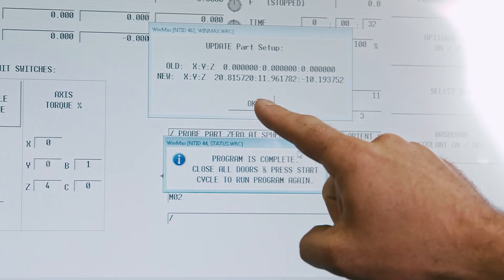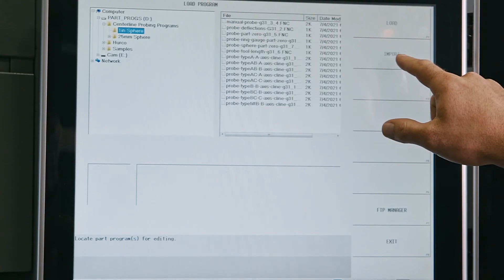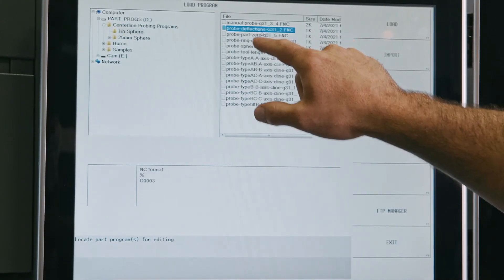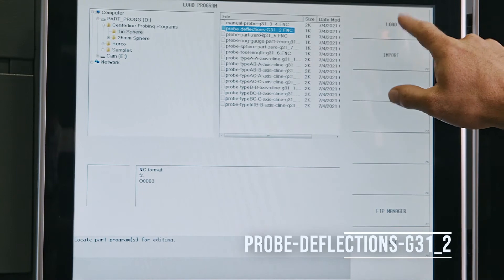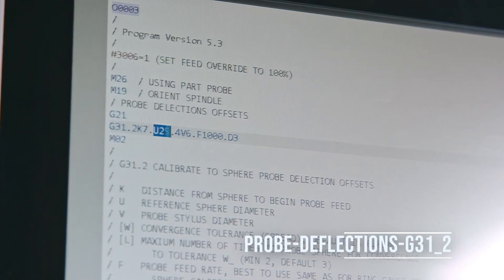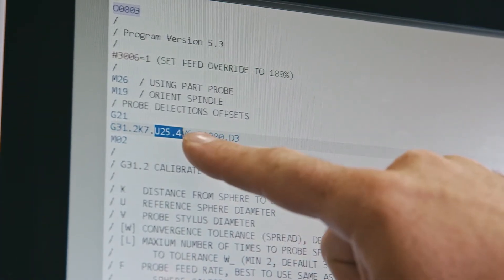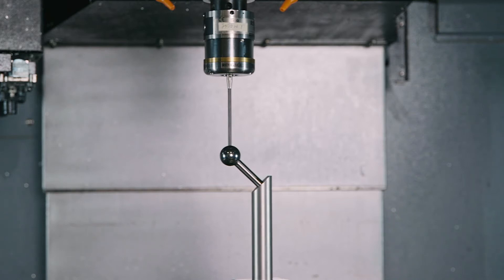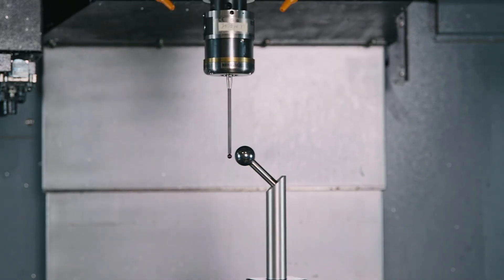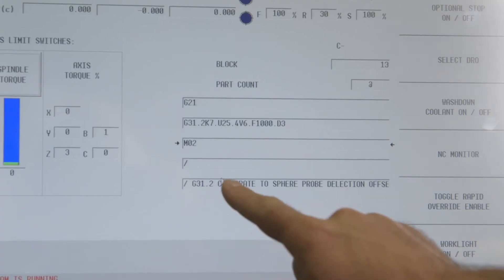Update with the data you have just collected. Now we have to measure the probe deflections. Simply load program probe deflections G31-2. Remember to update your reference to your size before running if necessary. Save the probe calibration and your setup is complete.